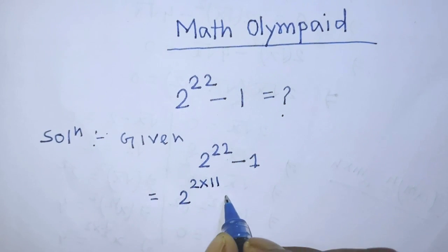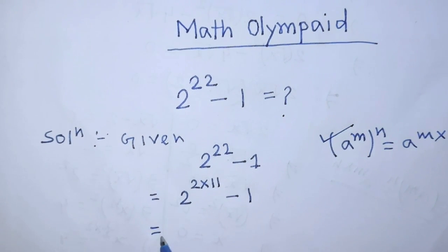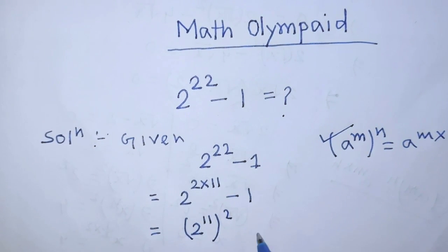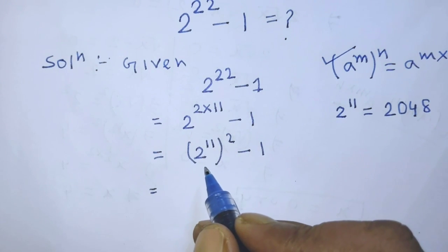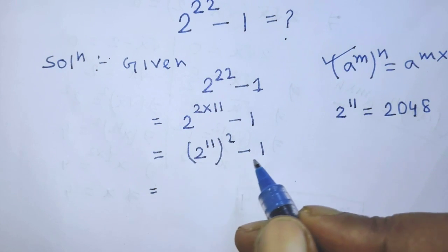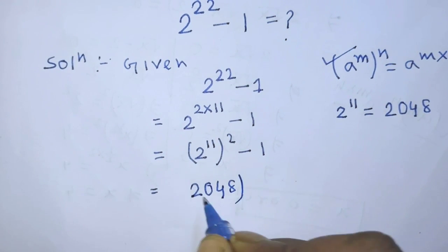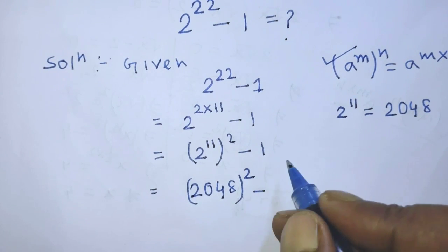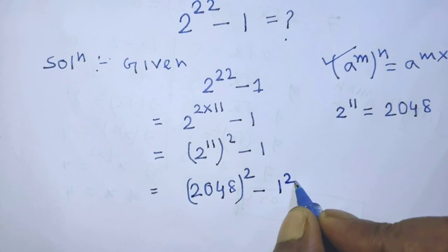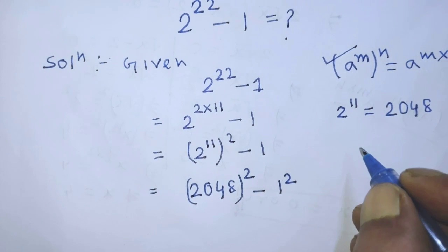According to the exponent rule, this becomes 2 to the power 11, whole to the power 2, minus 1. In this exponential form, in the place of 2 to the power 11 we can write 2048, so it becomes 2048 whole to the power 2 minus 1 to the power 2.